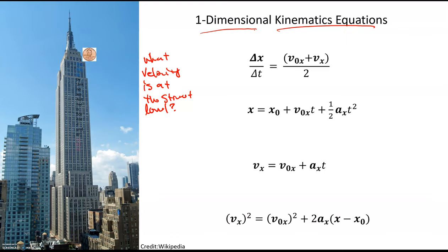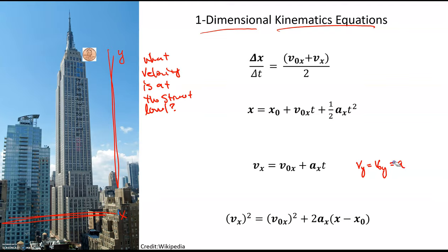The one-dimensional aspect means these equations apply for motion in the x direction, but they can also be applied to entirely vertical motion, like a penny being dropped. It just changes what the labels are: horizontal motion uses x, and vertical motion uses y. All you need to do is replace x with y — for example, the velocity equation becomes v_y equals v_not_y plus a_y times t. Either case is still just one-dimensional motion.